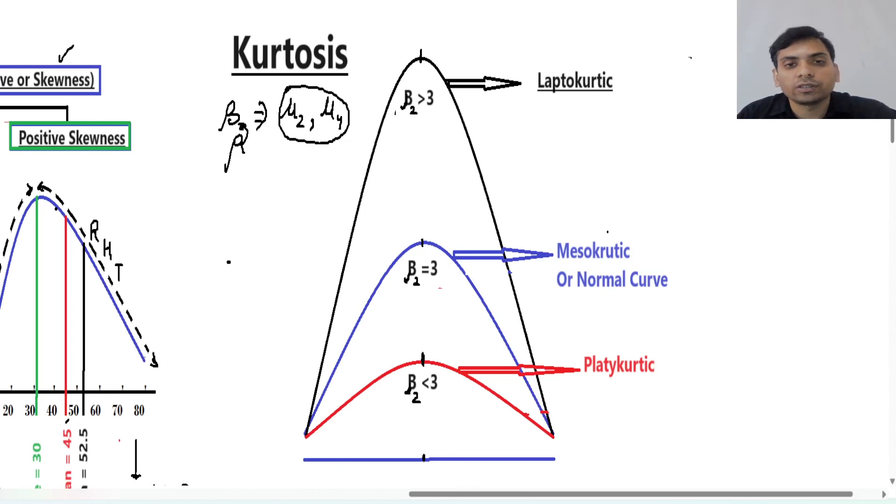This means your this kind of data is good for other statistical analysis. And if this beta 2 is less than 3, then we can say this is platykurtic. This may be good, but this is exactly not good for further statistical analysis.